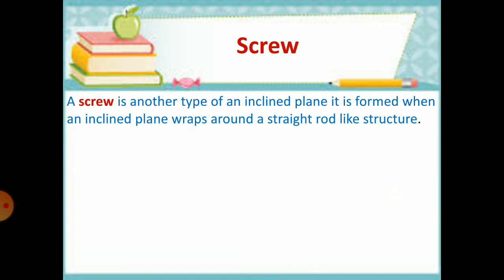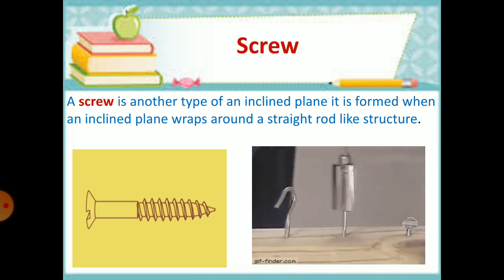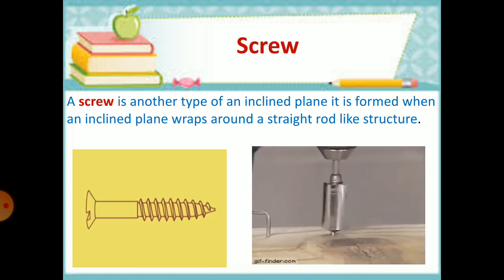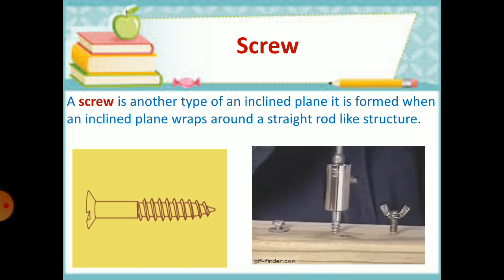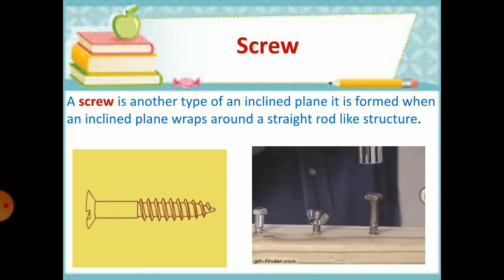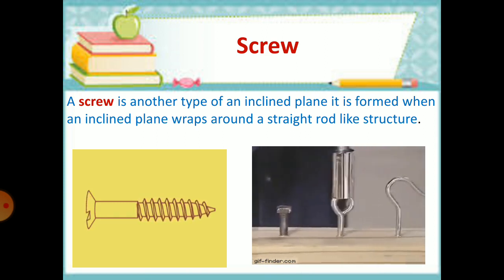Screw. A screw is another type of an inclined plane. It is formed when an inclined plane wraps around a straight rod like structure. We can use screw to join two wooden plants together strongly.